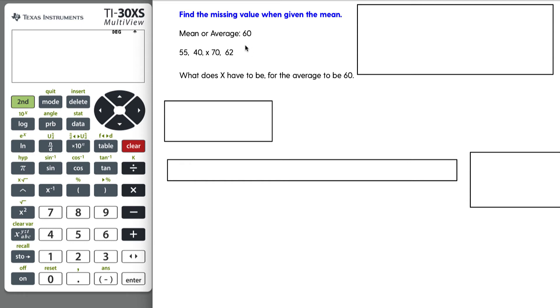So let's give an example here, just a really stripped down one, not really in a word problem format. The mean or the average is 60, and then you have four out of the five numbers. Notice the X here. So you have 55, 40, some unknown number, then 70, then 62.